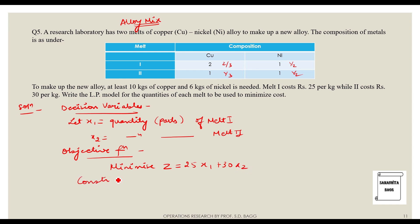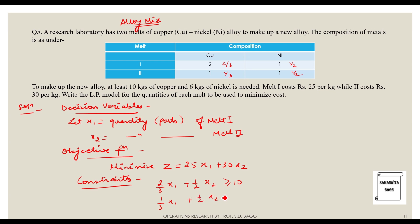The constraints are: for copper, at least 10 kg needed, so (2/3)x1 + (1/2)x2 ≥ 10. For nickel, at least 6 kg needed, so (1/3)x1 + (1/2)x2 ≥ 6. The non-negativity constraints are x1, x2 ≥ 0. That completes the LP formulation for the alloy mix problem.